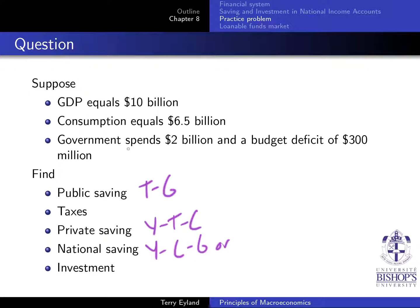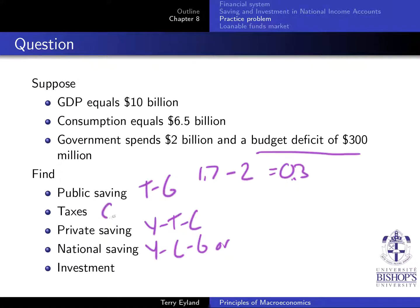Government spends $2 billion and has a budget deficit of $300 million. For it to have a budget deficit of $300 million, it must have collected $1.7 billion in taxes. $1.7 billion minus $2 billion of expenditures equals negative $0.3 billion — a deficit of $300 million. So $300 million equals $0.3 billion, meaning the taxes would have to be $1.7 billion.